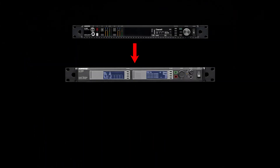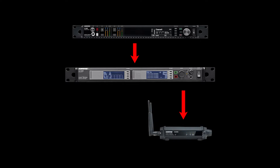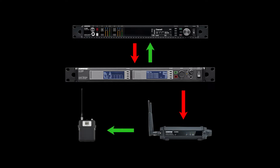Receivers set to detect interference work with the Spectrum Manager and the ShowLink Access Point to deploy clear frequencies to your system if interference is present. Frequency deployment happens within milliseconds before interference becomes audible.